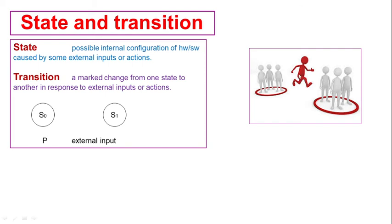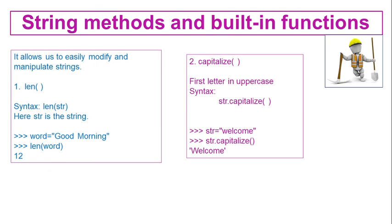From the image we can see a person shifting from one group to another. Initially one circle has 4 members and the other group has 3 members. When this person jumps from the first group to the other group because of some external input or action, that is called a transition. So state is the current configuration and transition is the change between states.